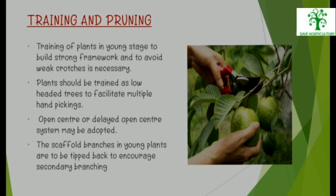Training and Pruning: Training of plants in the young stage is necessary to build a strong framework and to avoid weak crotches. Plants should be trained as low-headed trees to facilitate multiple hand-pickings. Open-center or delayed open-center system may be adopted. Scaffold branches in young plants are to be tipped back to encourage secondary branching.